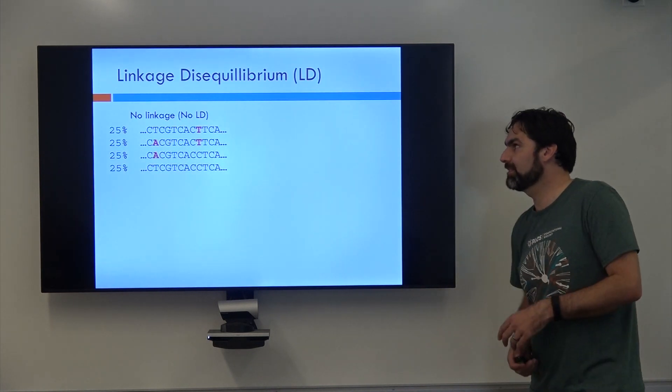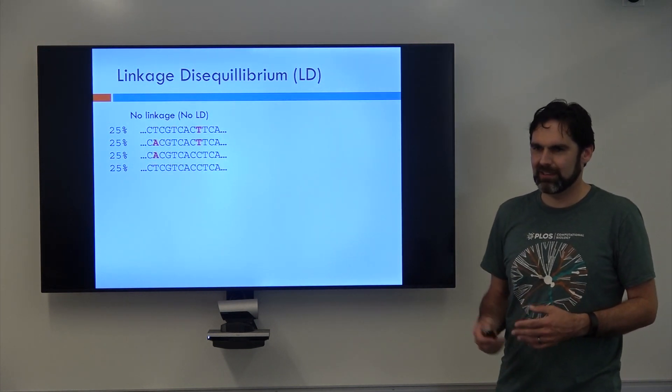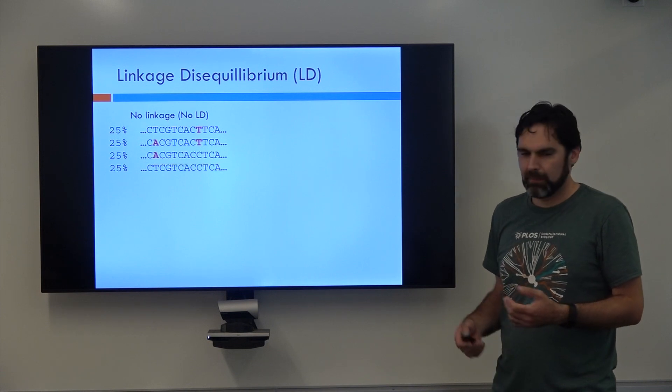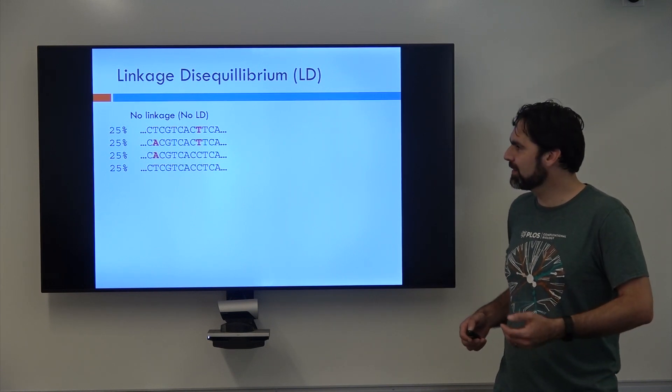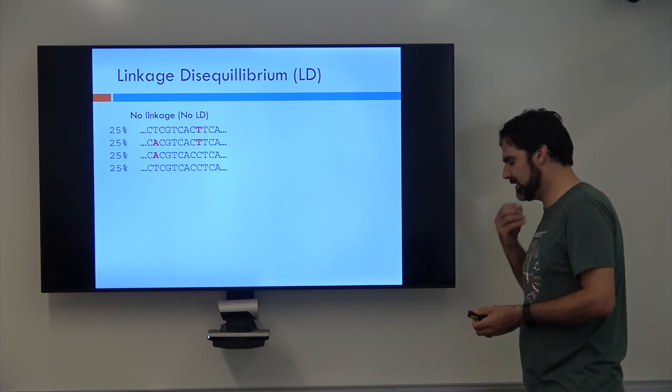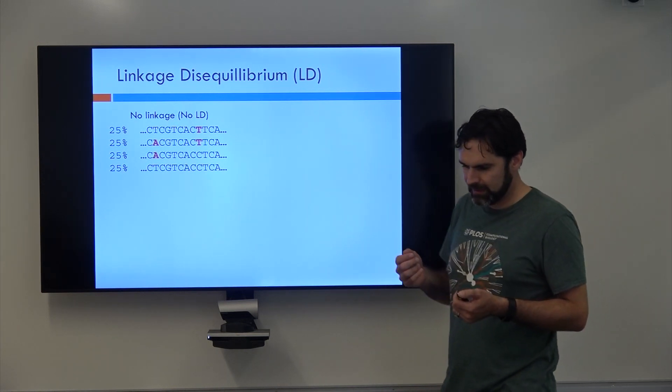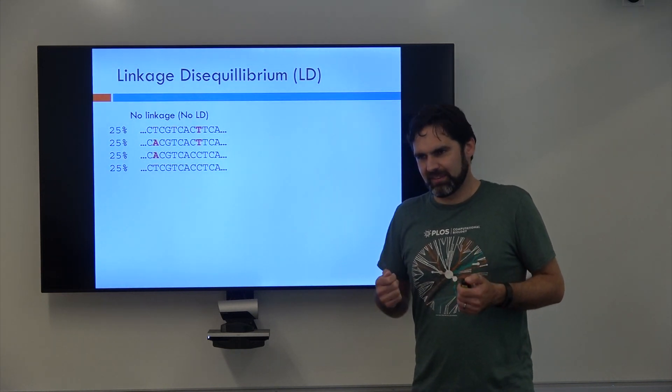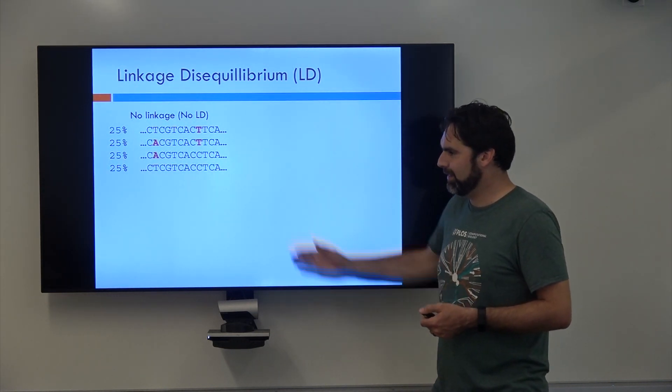And that's this thing called linkage disequilibrium. We also call it LD, and this is both the bane of our existence and the greatest thing that ever happened to us at the same time. Essentially what it is, is it tells us how correlated two SNPs are. And I'll explain what that means with this example.